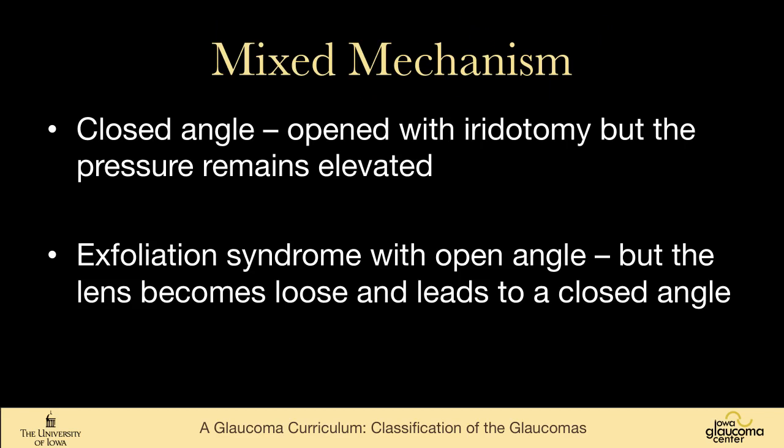There's a category called mixed mechanism, which is a little vague. For example, one can have an angle that is closed, have an iridotomy, have the angle open, and yet the pressure remains elevated — that might be called a mixed mechanism glaucoma. Or sometimes a patient has open angle glaucoma and later develops angle closure, such as in exfoliation syndrome where the angle is open but as the lens becomes loose it can lead to pupillary block or angle closure.